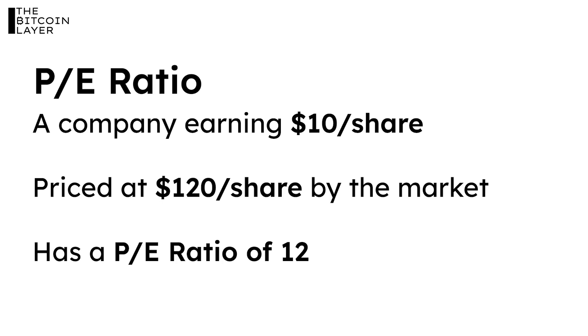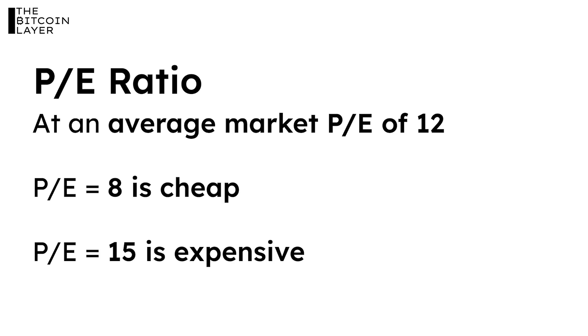So a company earning $10 per share priced at $120 per share trades at a P/E ratio of 12. If the company appreciated to $150 per share but earnings hadn't changed, that would be a P/E of 15. Likewise, if the price went down to $80 with earnings unchanged, that would be a P/E of 8. Historically, if the average P/E is 12, a ratio of 8 is cheap and a ratio of 15 is expensive.